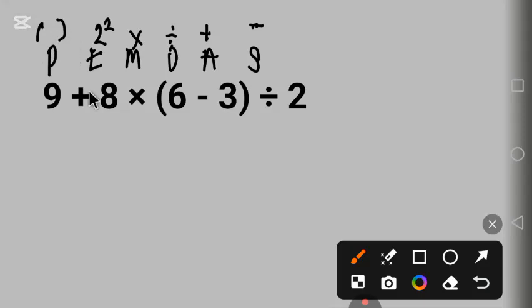The first here is parenthesis, and we have the parenthesis here. We begin with this one, so we have 9 + 8 × (6 - 3) ÷ 2. Six minus three is three, divide by two.